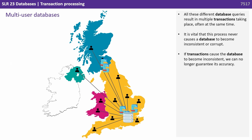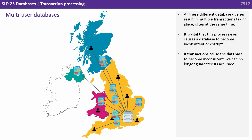All these different database queries result in multiple transactions taking place, often at the same time. It's vital that this process never causes a database to become inconsistent or corrupt. If transactions cause the database to become inconsistent, we can no longer guarantee its accuracy.